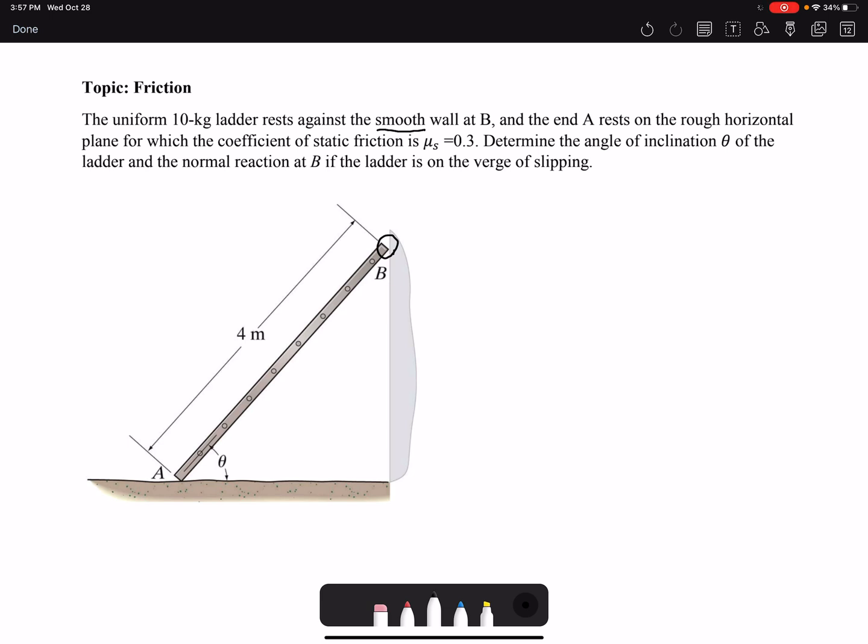At the end A, it rests on the rough horizontal plane for which the coefficient of static friction is 0.3. Because it says rough, we have friction and the friction coefficient is given to us. Determine the angle of inclination theta of the ladder and the normal reaction at B if the ladder is on the verge of slipping.